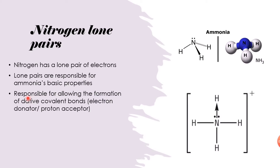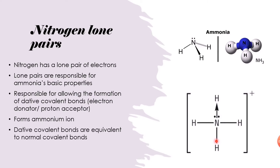The lone pair of electrons is also responsible for allowing the formation of dative covalent bonds. Both electrons come from the nitrogen to form a dative covalent bond — it donates these electrons to the bond and accepts a proton, an H⁺ ion. This forms an ammonium ion: nitrogen bonded to four hydrogens with a positive charge. Once formed, dative covalent bonds are equivalent to normal covalent bonds.